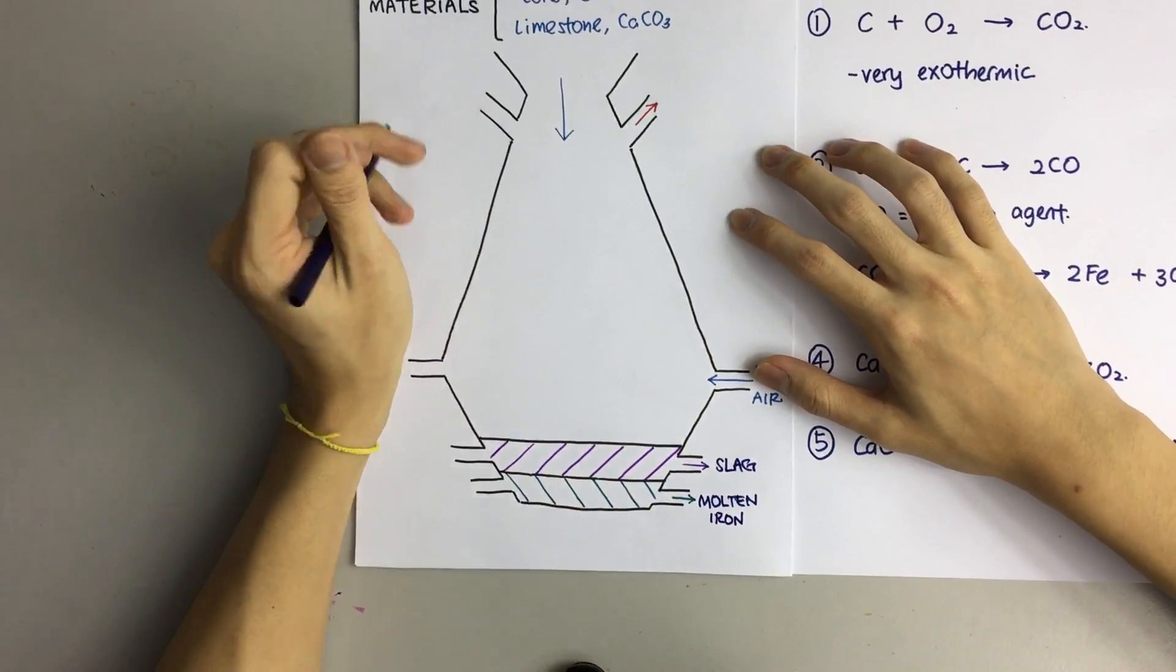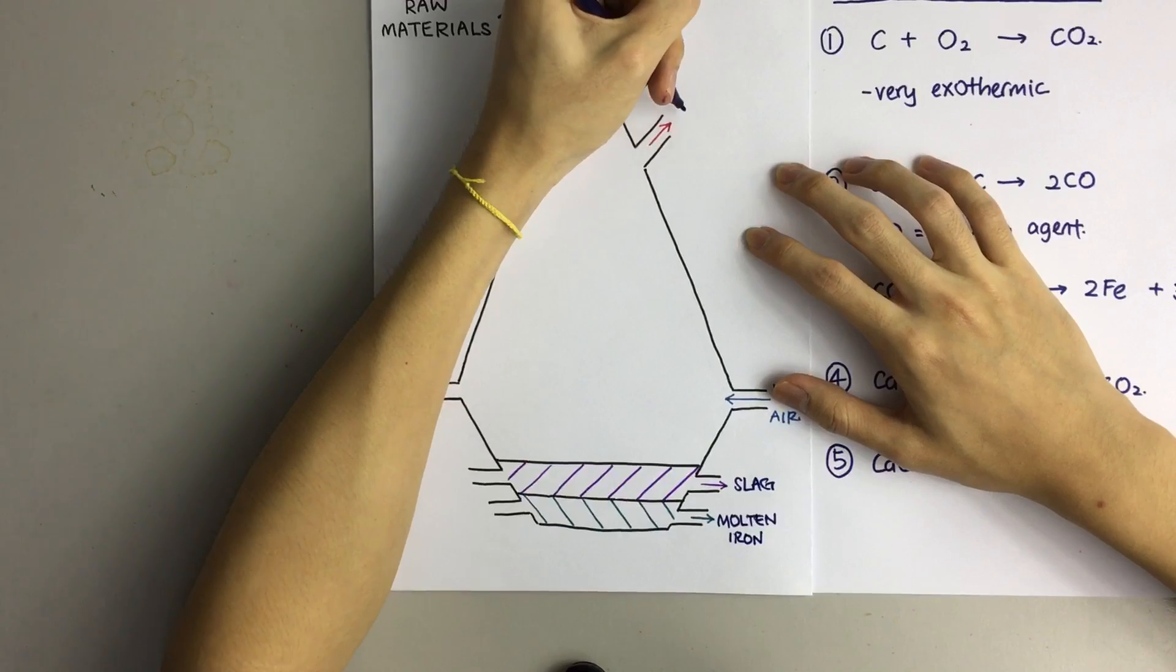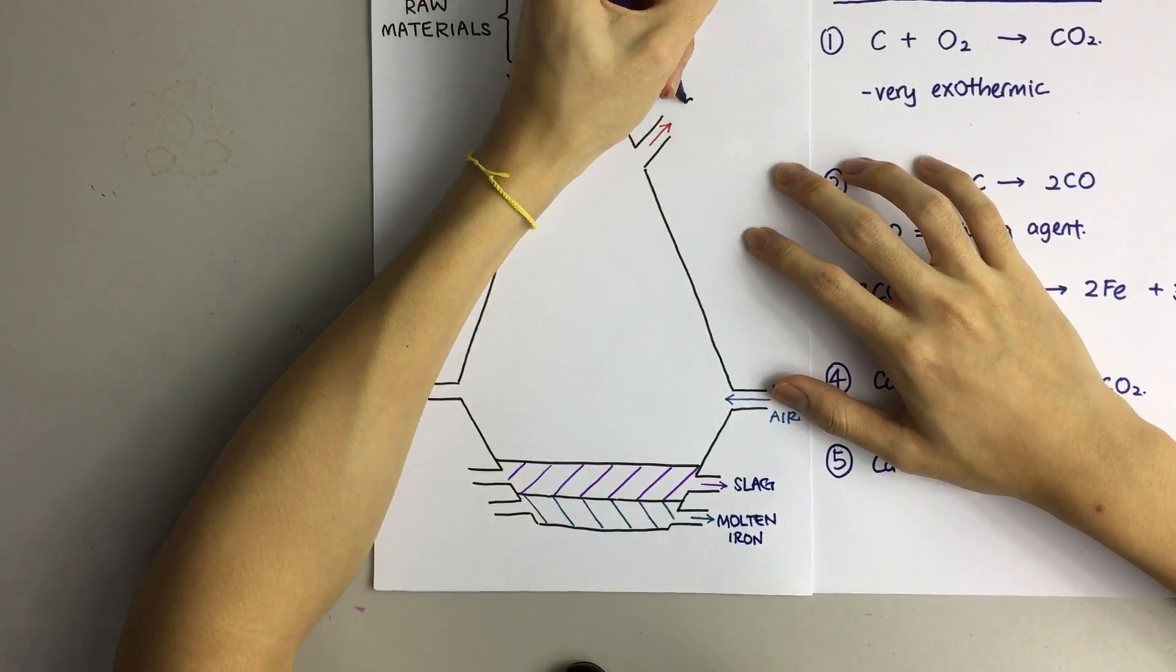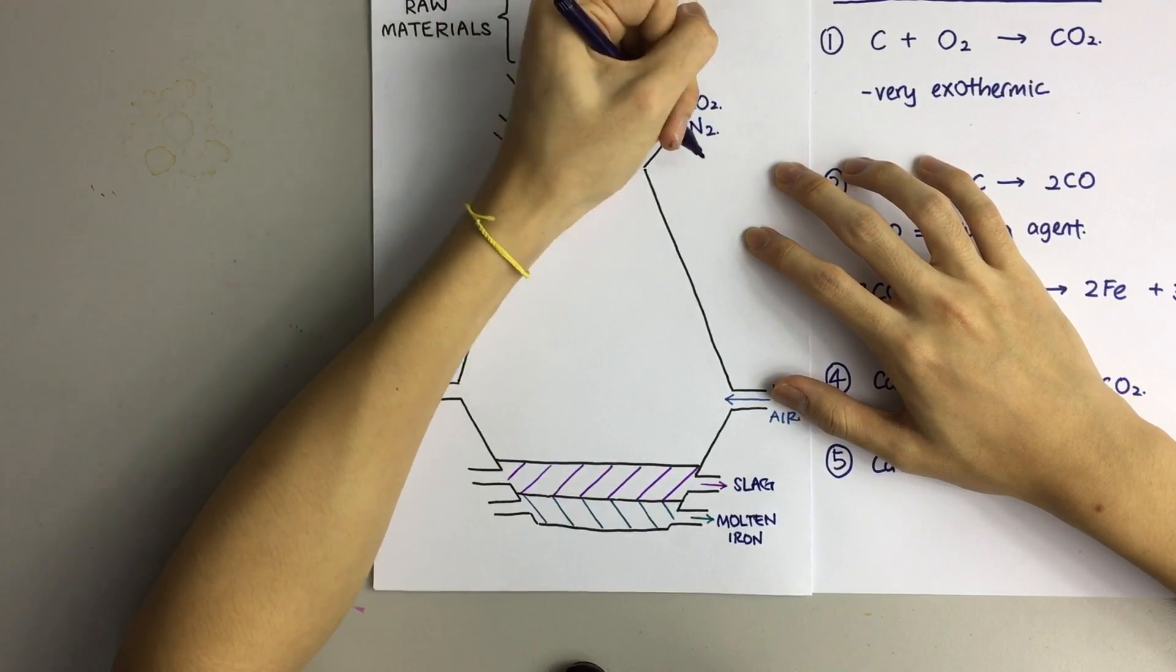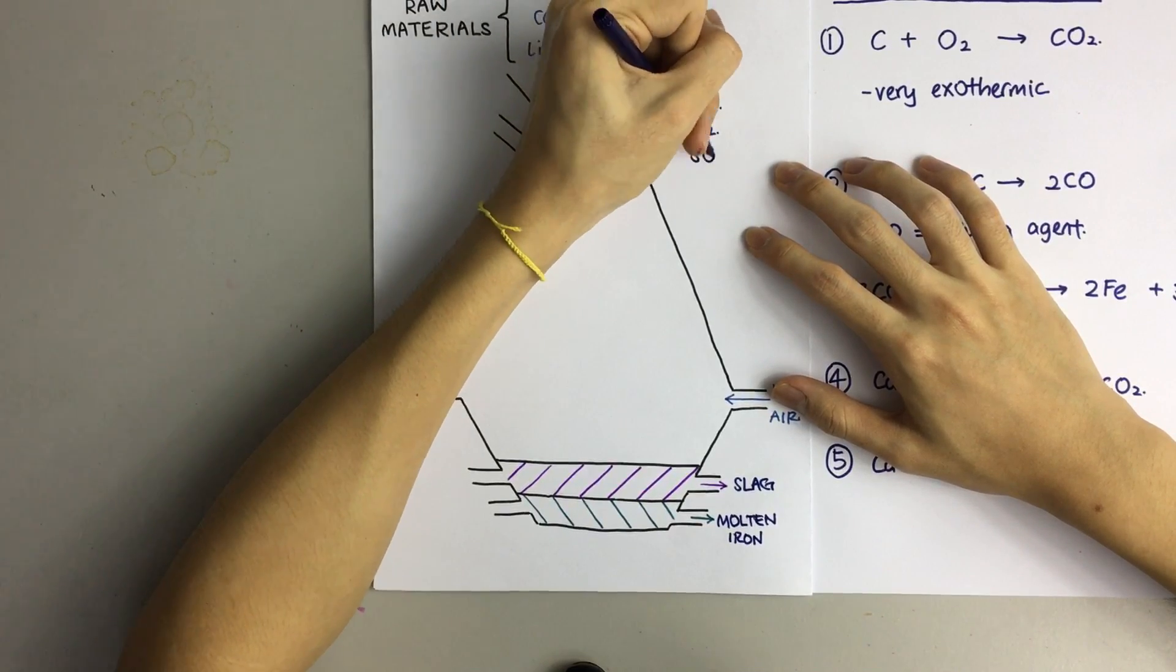All your gases will escape from the top. That includes carbon dioxide, nitrogen and even some sulphur dioxide.